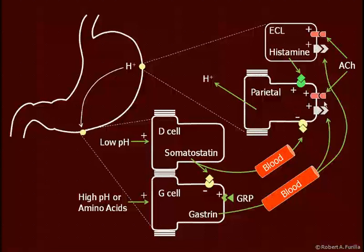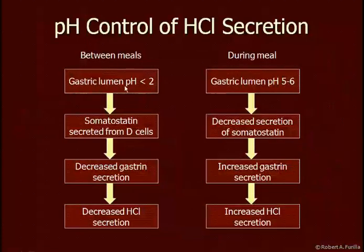Somatostatin will inhibit gastrin secretion and also inhibit hydrogen ion secretion directly. By inhibiting gastrin secretion, we reduce the stimulus, and by inhibiting parietal cells directly, we reduce hydrogen ion secretion by a greater amount. Between meals, the gastric luminal pH can be less than 2, which triggers somatostatin secretion from D cells, inhibiting gastrin and decreasing hydrochloric acid secretion. At very low pHs, we don't want to be triggering more acid secretion.